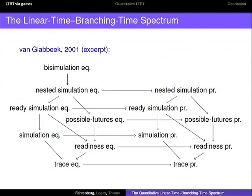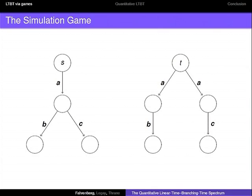What I want to do next is to reorganize this using games. Let me introduce the simulation game. In this game there are two players, and they are trying to find out whether state T simulates state S across two transition systems with labels. Player one will be the red player, player two will be the blue player. The red player is trying to prove that those two states are not similar — that T does not simulate S. The blue player is trying to prove the simulation relation.